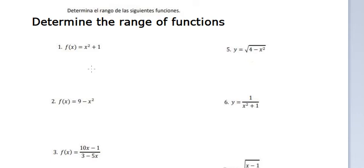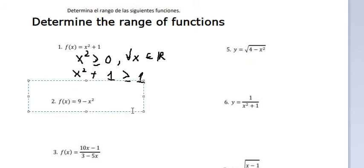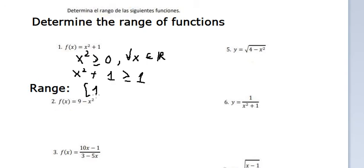Hello everybody, today I will talk about calculus. The topic is about determining the range of functions. For question number one, we know that x squared is always greater than or equal to zero for all values of x belonging to the real numbers. So x squared plus one is greater than or equal to one, because we just add one to both sides. So the range should be from number one — we use a square bracket — to positive infinity.